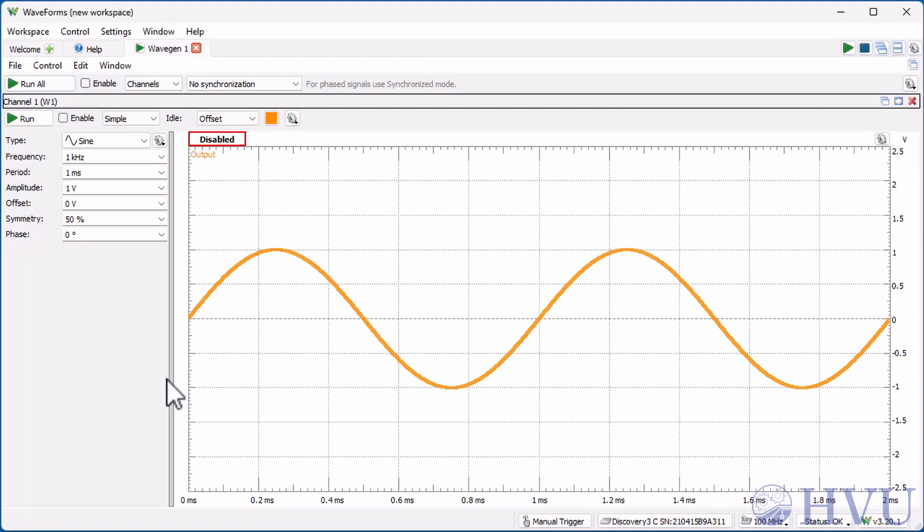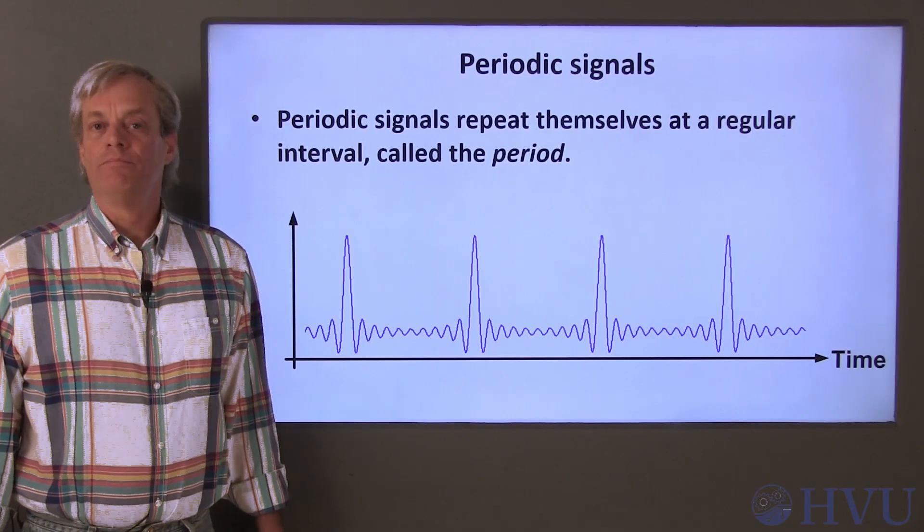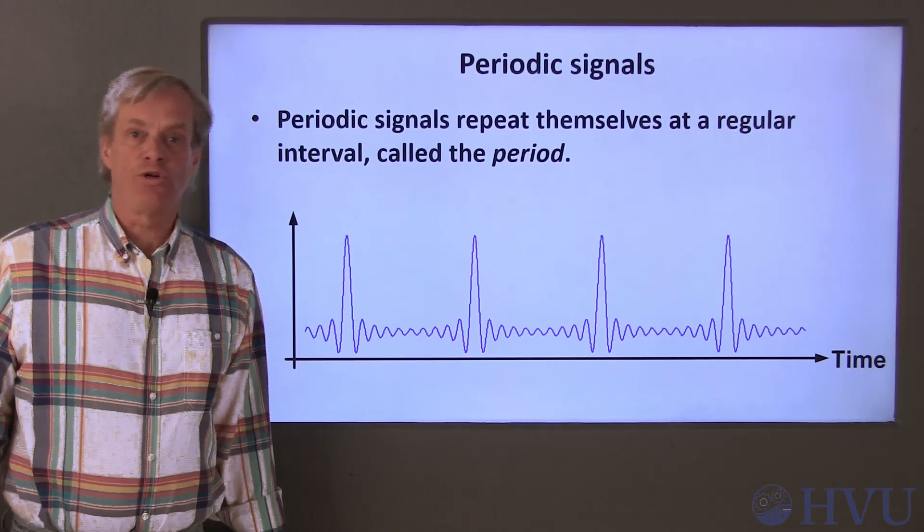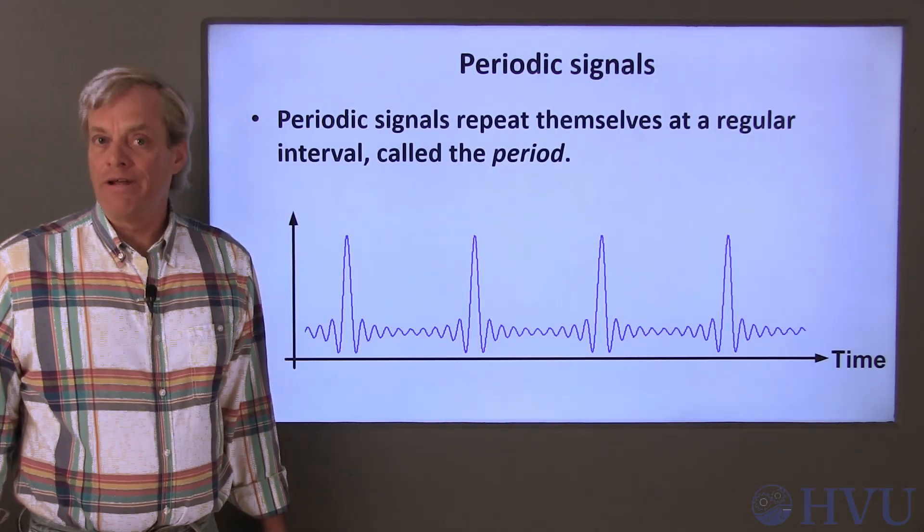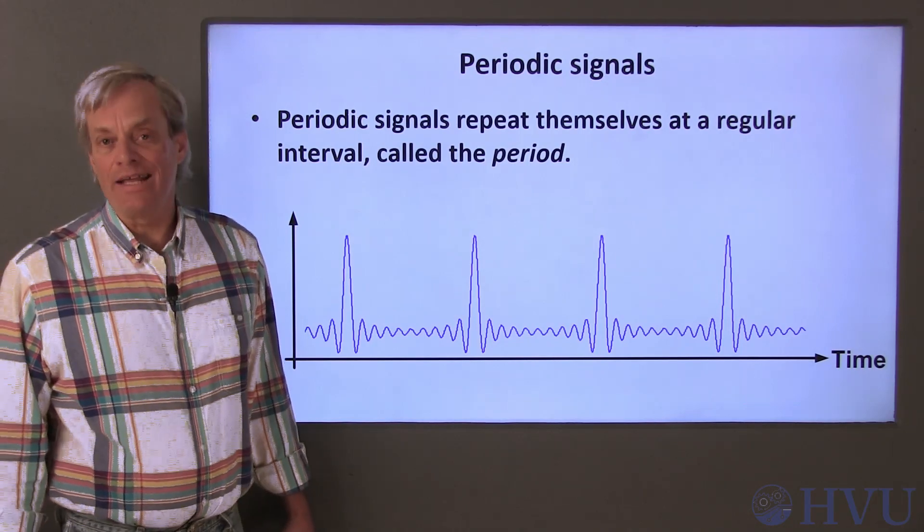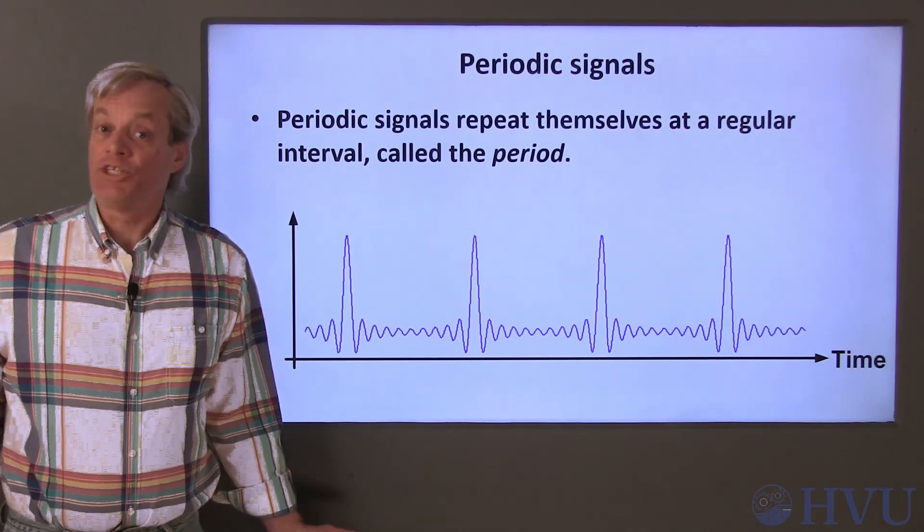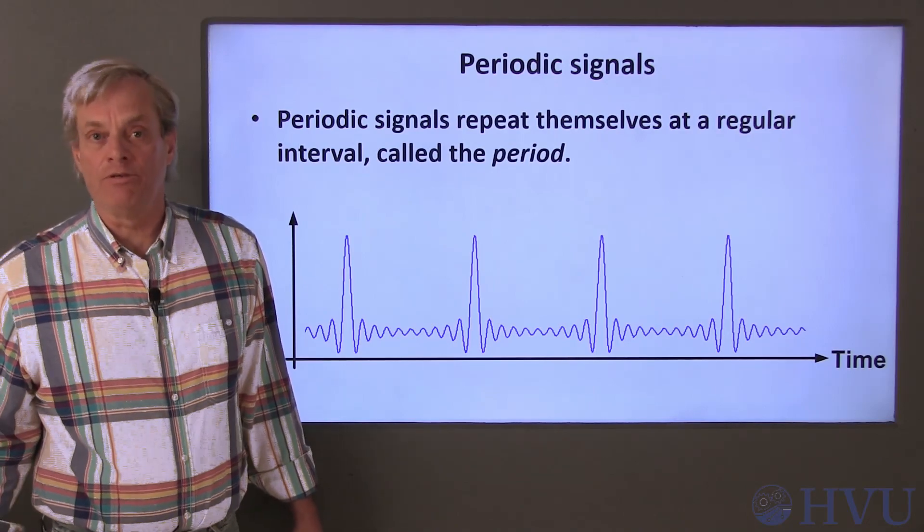Parameters, such as voltage or current, which vary with time, are called signals. Waveform generators create what are called periodic signals. That just means that the shape of the signal repeats itself at a regular interval.